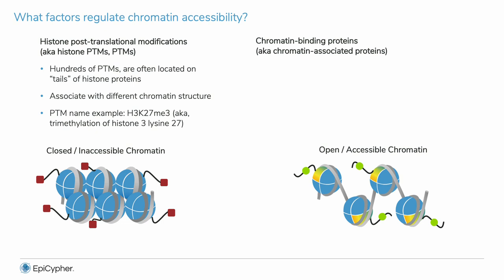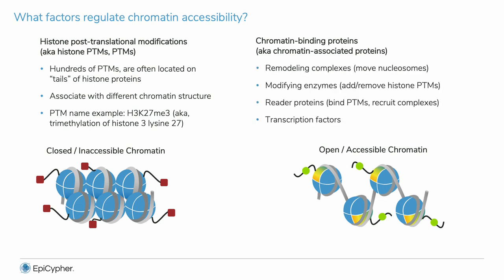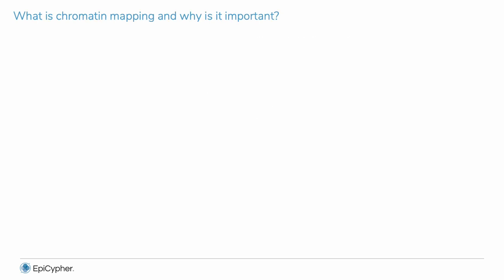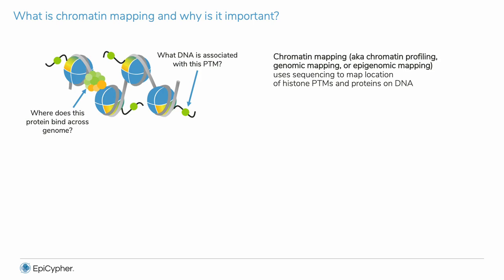The next class of factors that regulate accessibility are chromatin binding proteins. There are many classes of chromatin-associated proteins, but in general some proteins help establish or maintain closed chromatin, while others open chromatin structure or promote gene expression processes. Chromatin mapping is used to identify the DNA wrapped around nucleosomes containing specific histone PTMs or the binding sites of chromatin-associated proteins. These assays use next-generation sequencing to identify the location of PTMs and proteins across the entire genome.